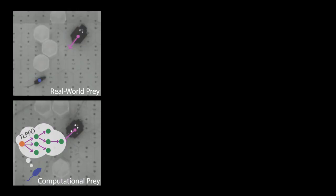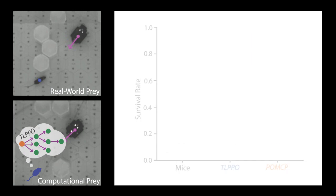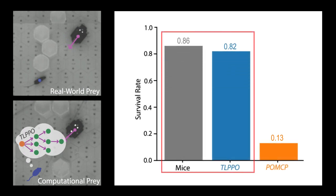Our results showed that the TLPPO algorithm enabled the agent to interact with an aggressive robotic predator in real-time successfully. Its performance was comparable to a live mammal, which has evolved a plethora of capabilities, possibly including the ability to plan to survive in this naturalistic scenario.